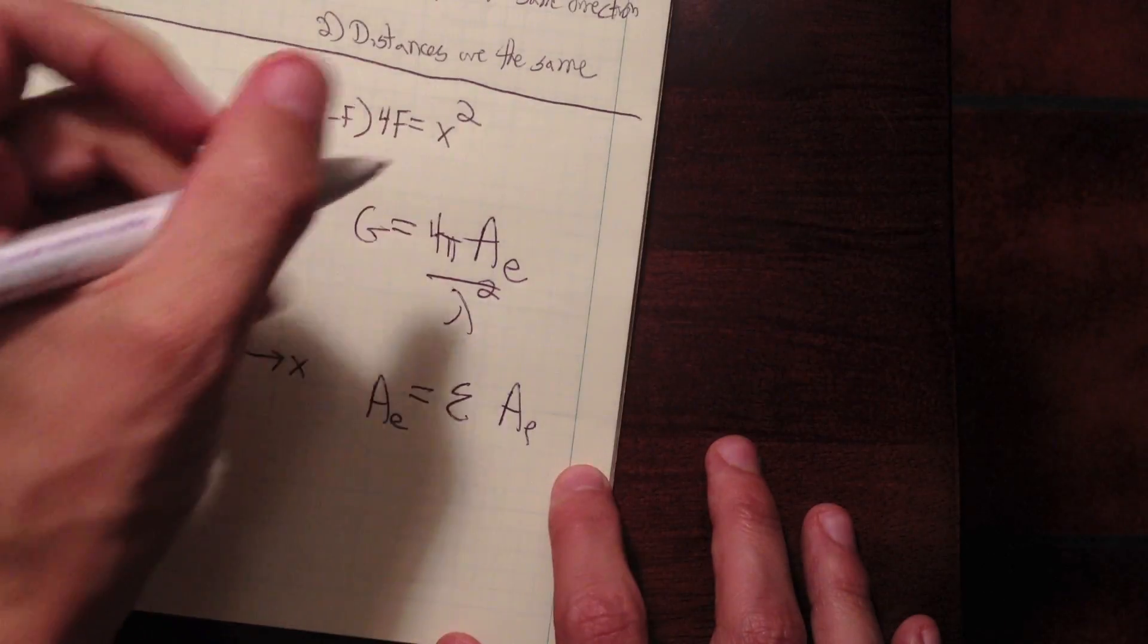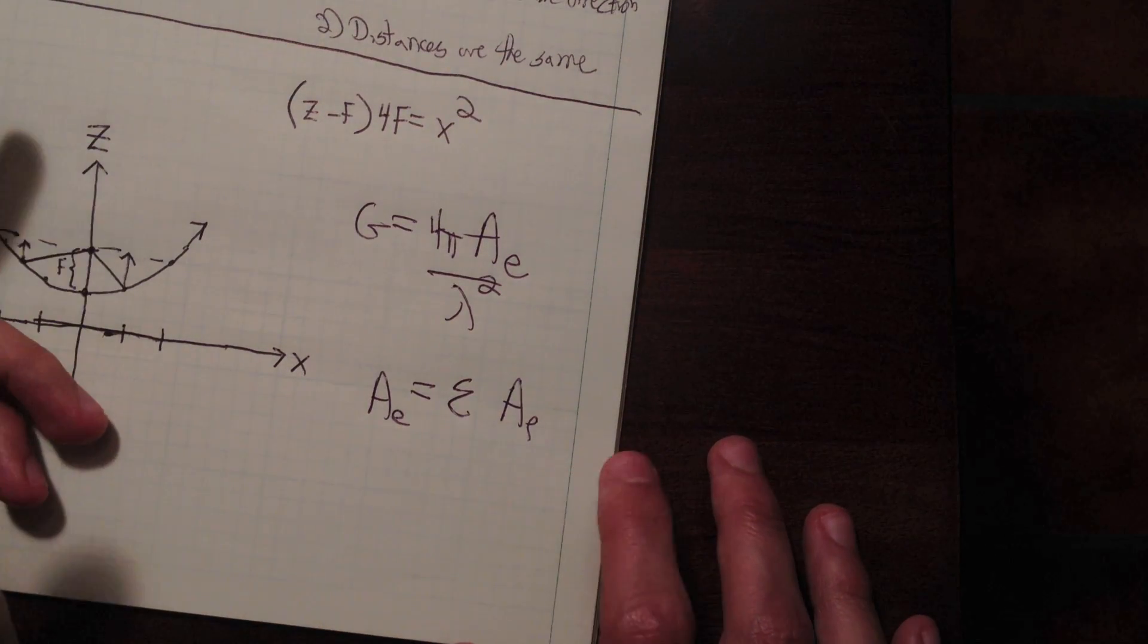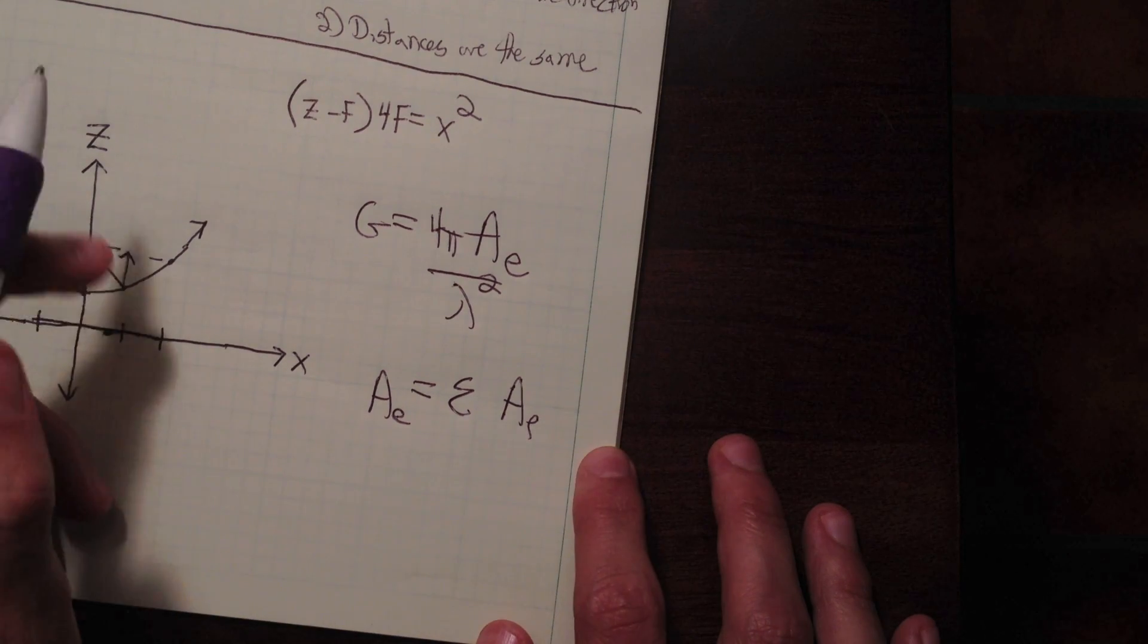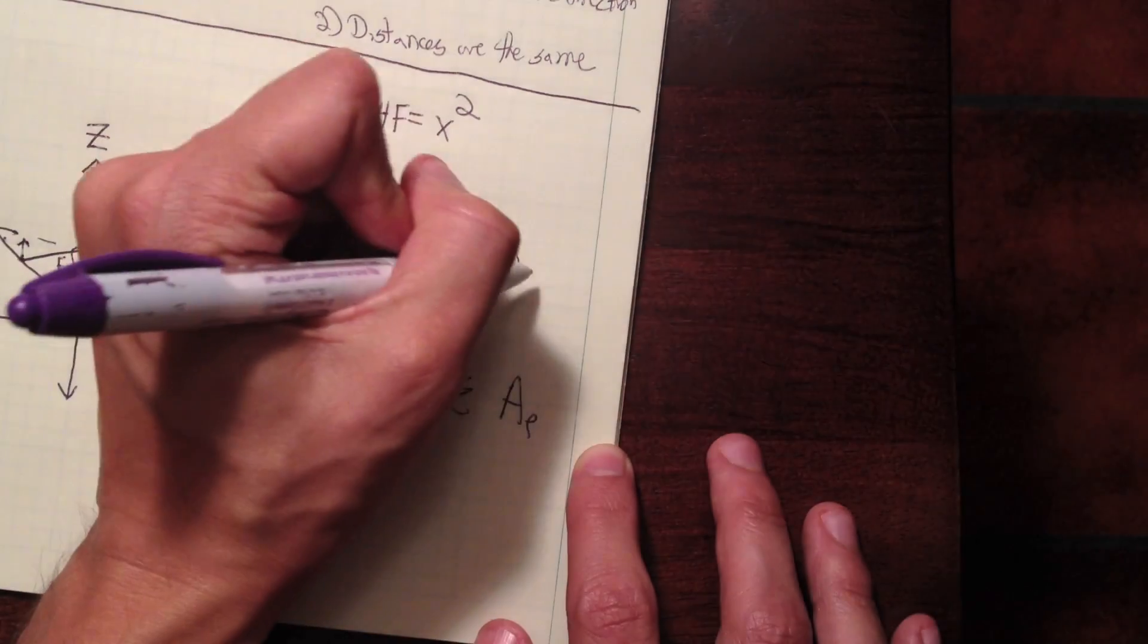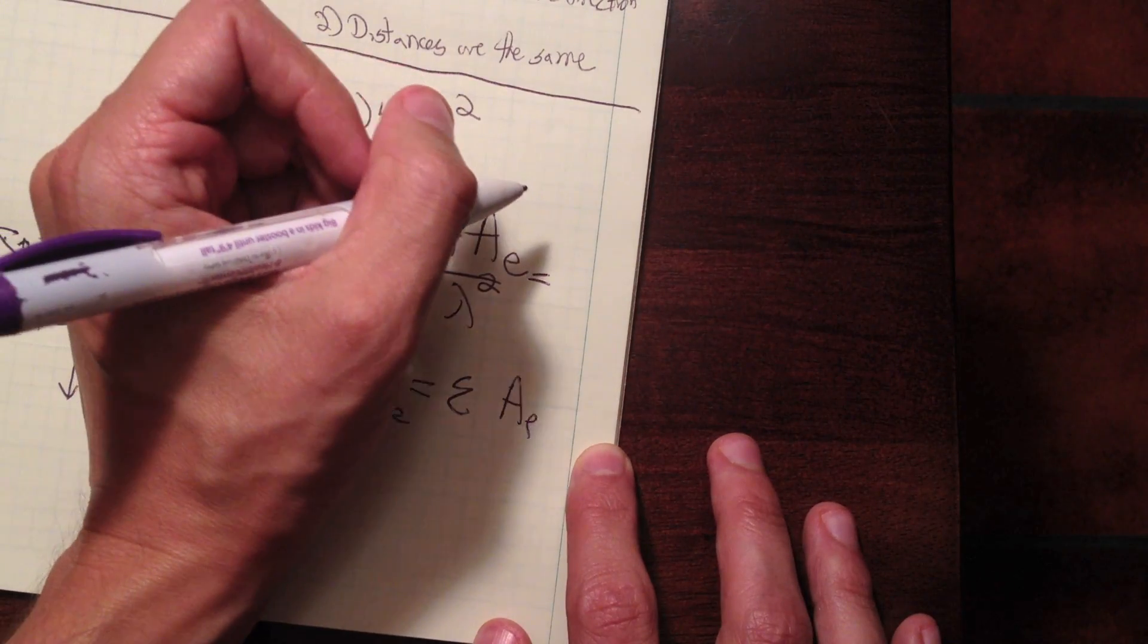So the physical area is pi r squared, where r is the radius of the dish, or pi d squared over 4.